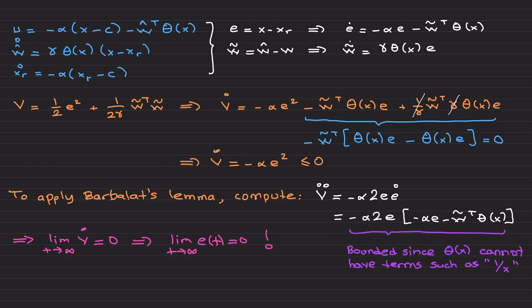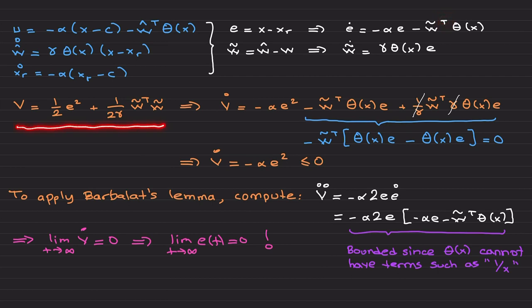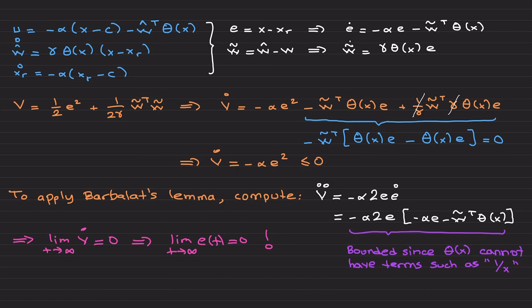The main important part of this video is neural networks, but I need to make sure you understand structured uncertainties first. I am going to perform a similar Lyapunov analysis. This is the error, this is w-tilde. You can write the error dynamics and w-tilde dynamics accordingly. The known basis function theta appears, and w-tilde transpose pops up. I am going to use an almost identical Lyapunov function candidate — the only difference compared to previous videos is the transpose term.